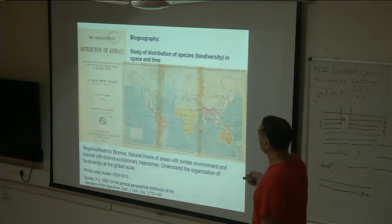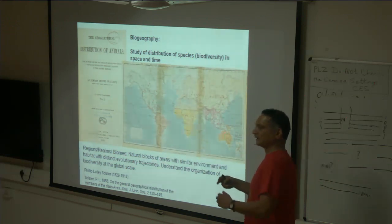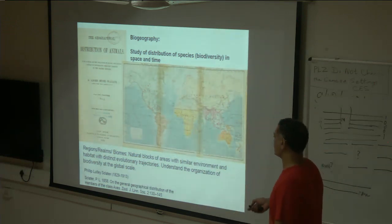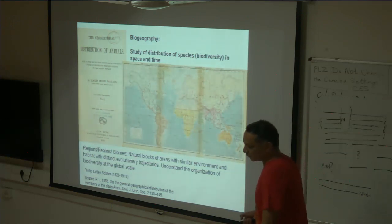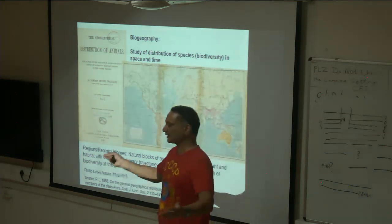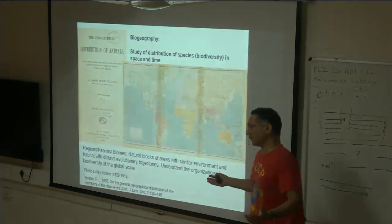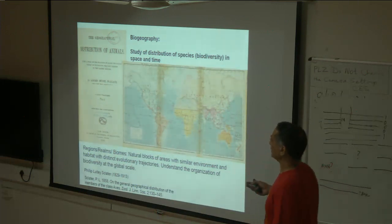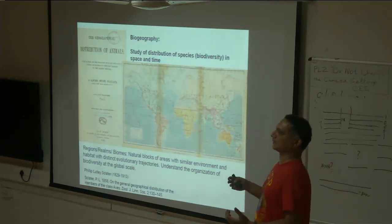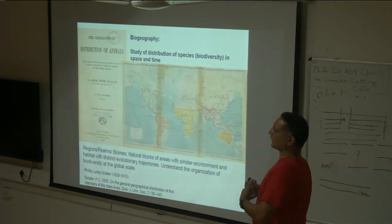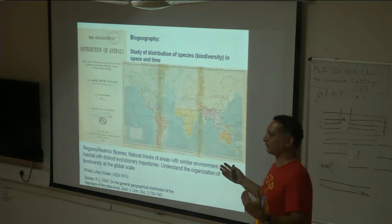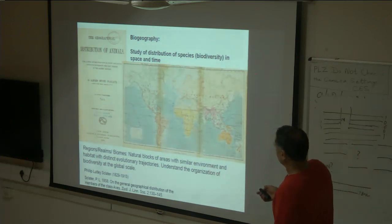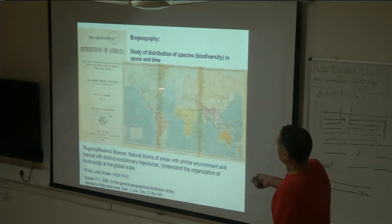These are natural blocks of areas with similar environment and habitat with distinct evolutionary trajectories — meaning there is turnover of species as you go from one biogeographic realm to another. Biomes are different: desert is a biome, rainforest is a biome. Biomes are habitats that occupy a particular environmental zone. Keep that in mind — biomes do not fall in this category. These are regions or realms.